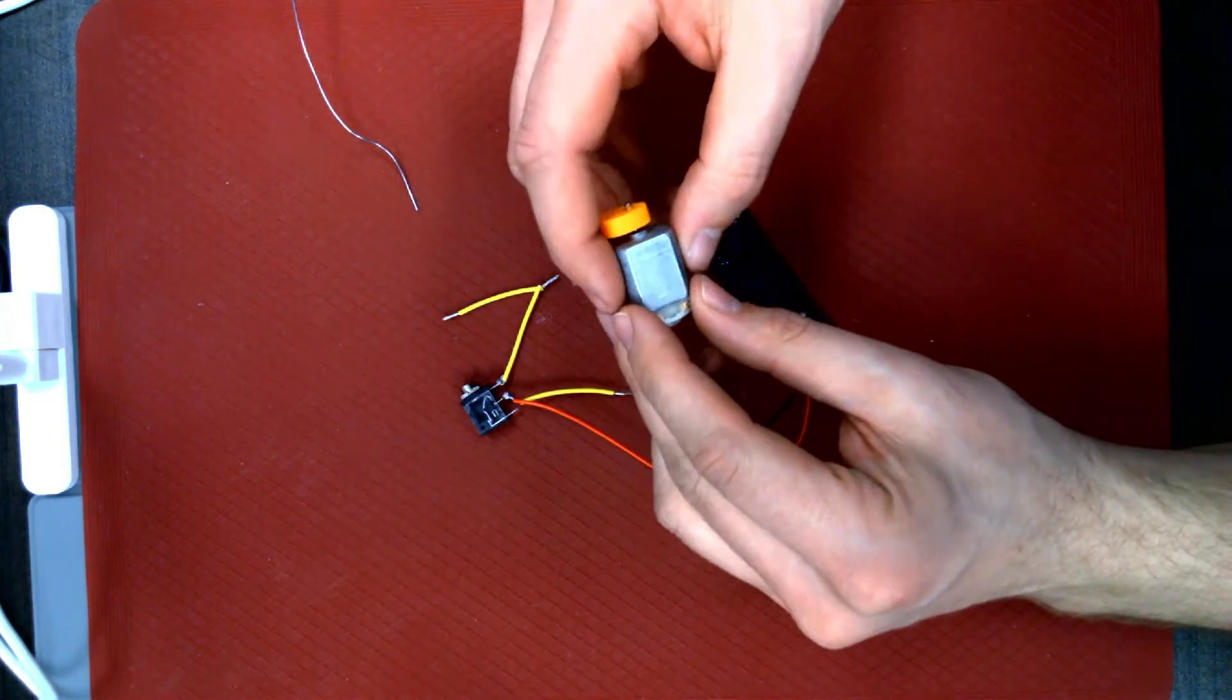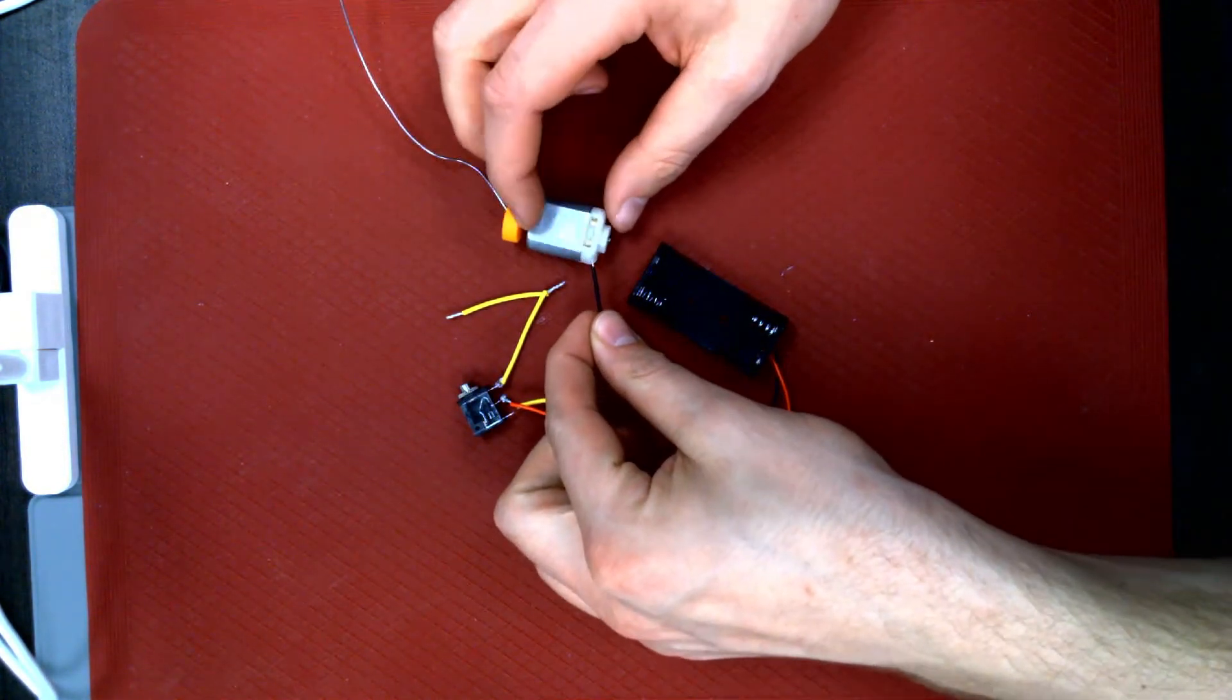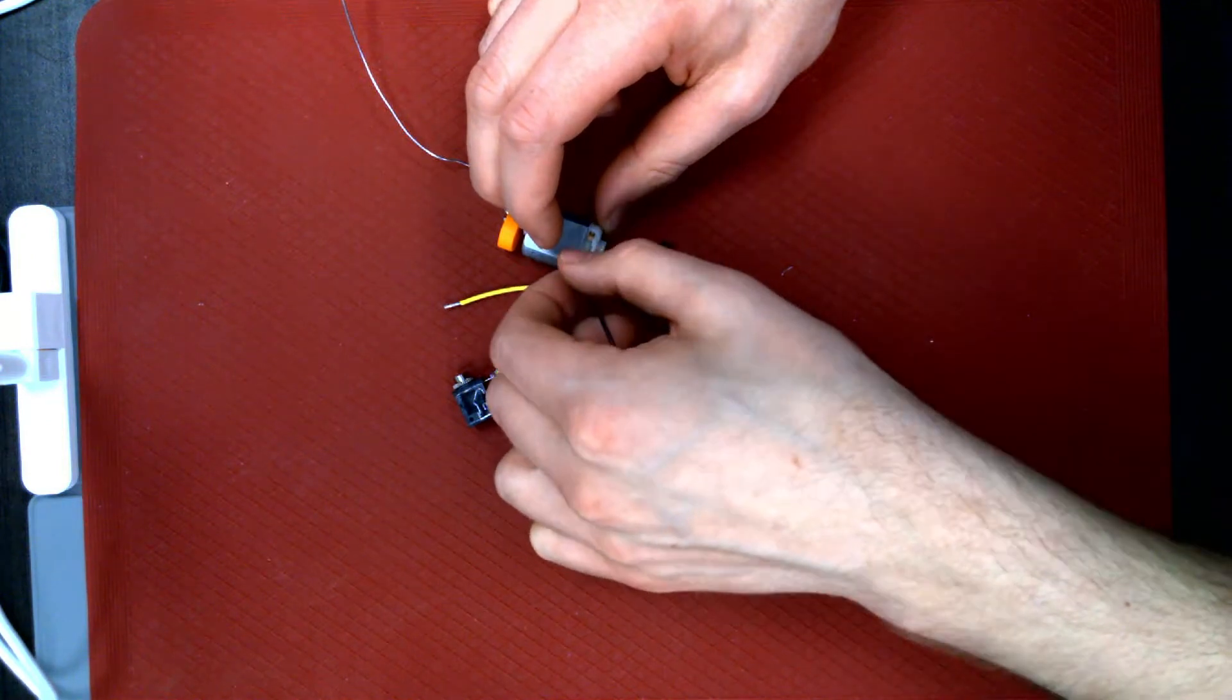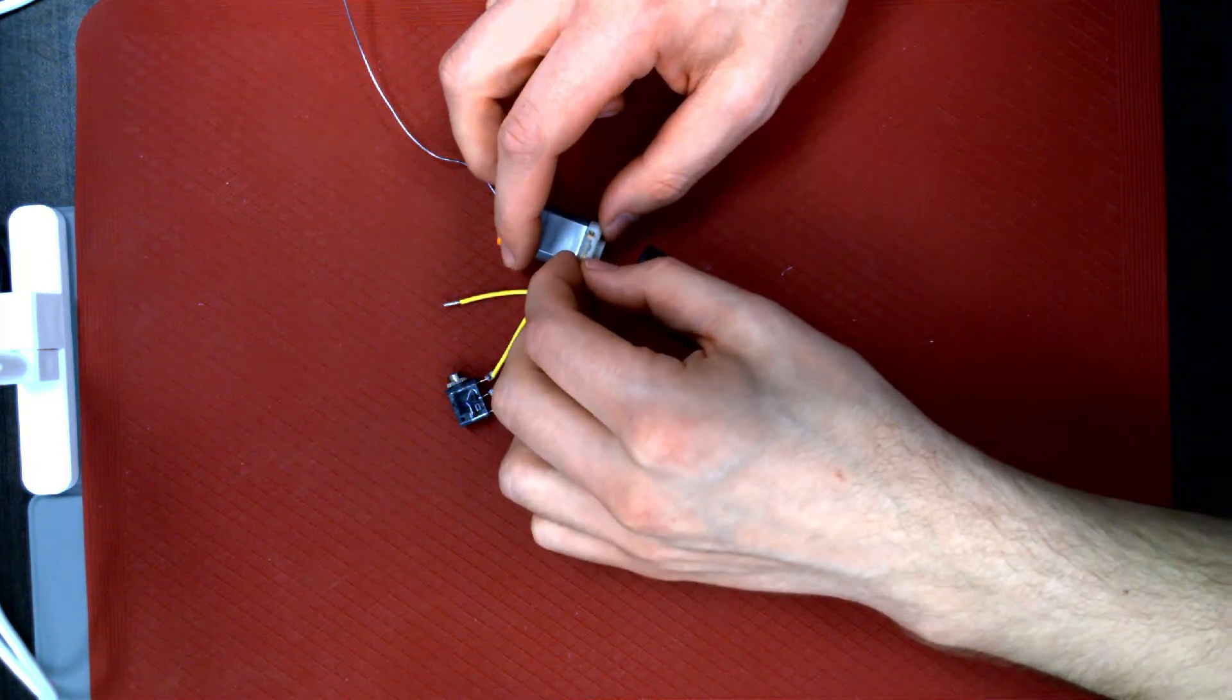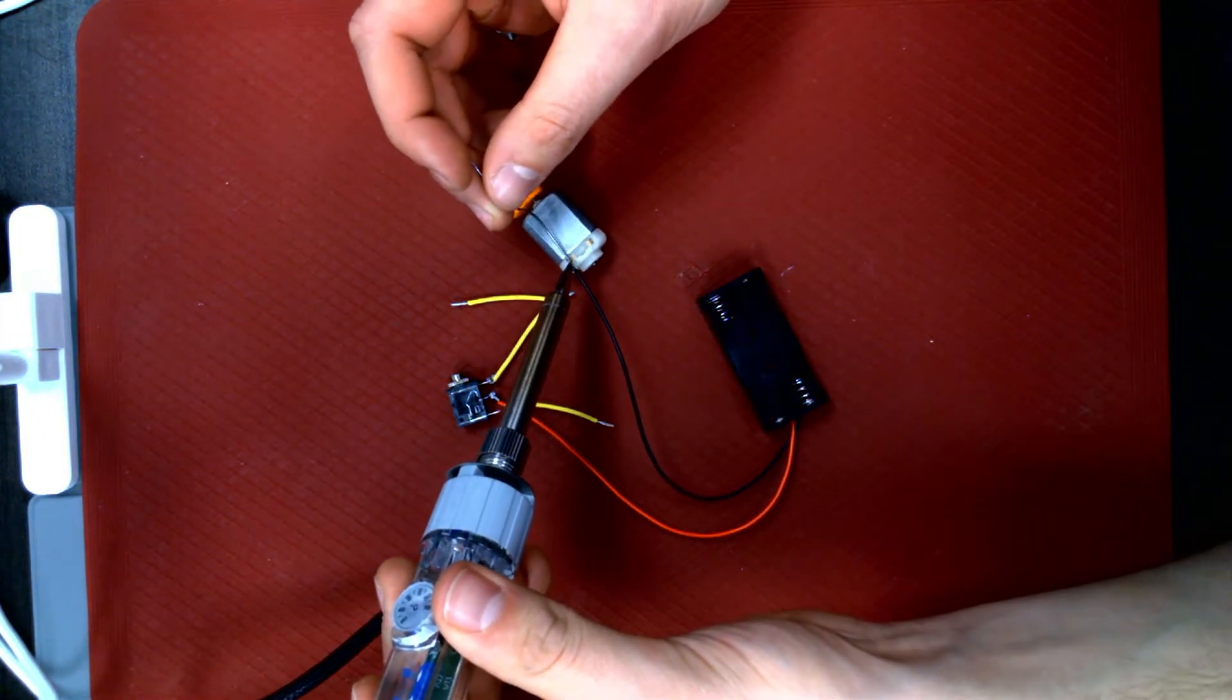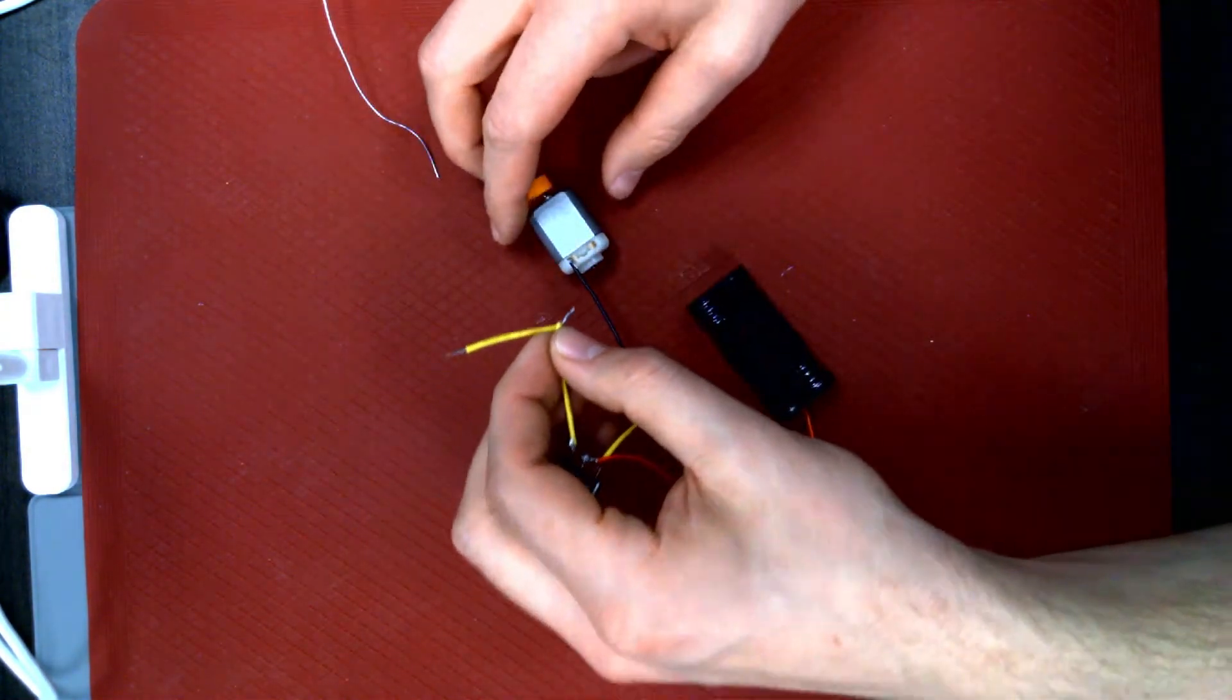Next, orient the motor so the pins are facing up and the cam pointed away from you. Then, solder the black wire from the battery holder to the left motor pin. Lastly, solder the joint connection of the two cut wires to the remaining motor pin.